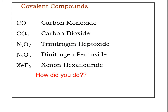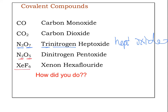How did you do? Hopefully you saw that with three nitrogens, that's trinitrogen, and seven oxygens — instead of 'hepta-oxide,' we drop the A and call it 'heptoxide.' For dinitrogen pentoxide, similarly 'penta-oxide' becomes 'pentoxide.' And for the last one, because mono is on the first element, you don't need to include it — but it's okay if you do.